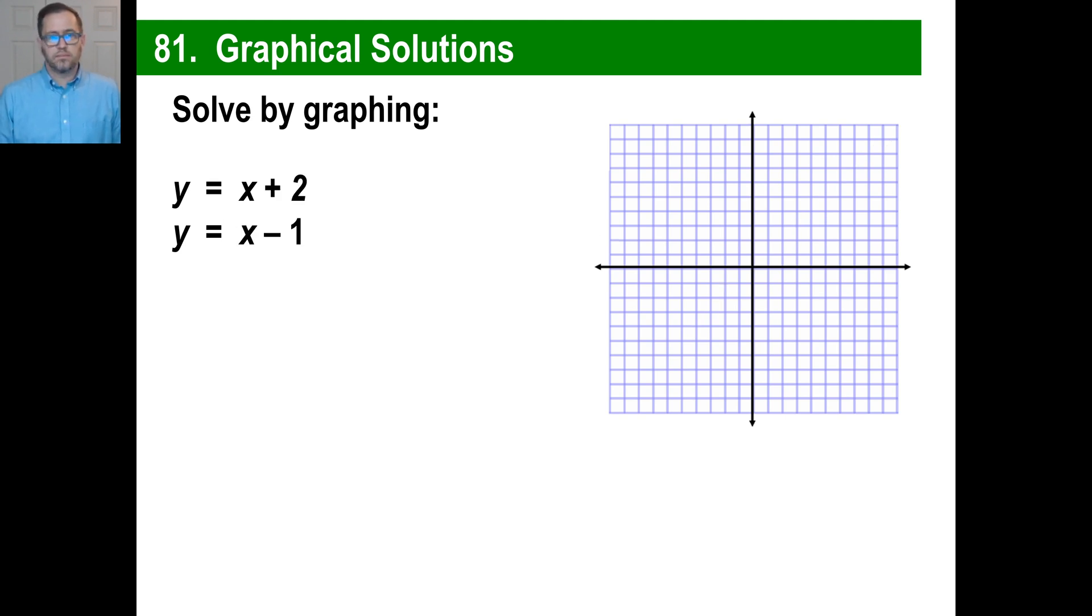This is a weird one. Go ahead and pause it. Graph both of these on the same piece of graph paper. Go ahead and do that right now. Now, you might have found something really weird. What you should have found is this. The first one, the y-intercept is 2. The slope is 1, 1 over 1. So we'll go 1, 1. Like this.